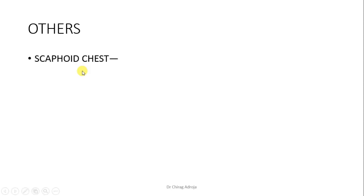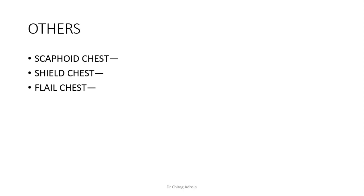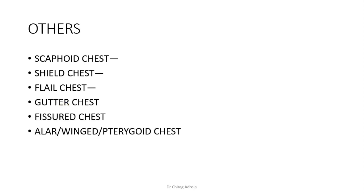Other chest types — only names: scaphoid chest is seen in situs inversus; shield chest is seen in Turner syndrome and Noonan syndrome where nipples are widely spaced; flail chest — more than two rib fractures at two different sites produce a flail chest, causing paradoxical breathing which is dangerous; gutter chest is a gutter-like deformity in the central sternum area; pterygoid chest (winged chest) is mostly seen in long or flat chest where the vertebral border of scapula is prominent; phthisoid chest is also called pre-tubercular chest.